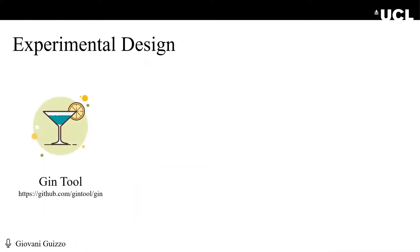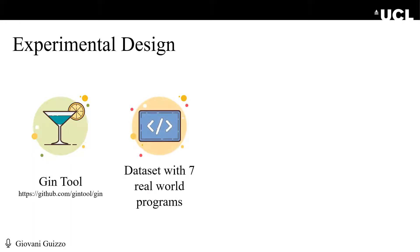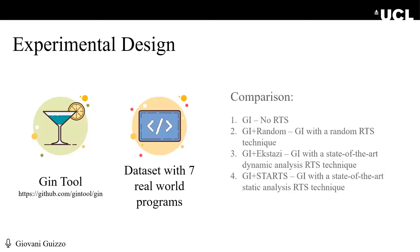For our experiments, we use GIN, an open-source GI tool for Java programs. It offers both functional and non-functional optimization algorithms. We also use seven real-world software from the Apache Commons suite, and we compare the results with four different techniques: GI with no RTS, GI with a random RTS (just for sanity check), GI with Ekstazi — a dynamic analysis RTS technique — and GI with STARTS, a static analysis RTS technique.